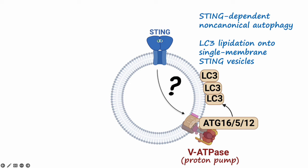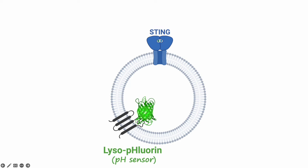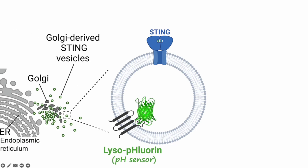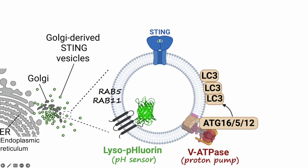While exploring whether STING triggers endolysosomal stress, we observed a STING-dependent lysofluorin puncta formation. Lysofluorin is a pH sensor normally targeted to late endosomes and lysosomes, and its fluorescence is quenched by the acidic pH in these compartments. However, STING-induced lysofluorin puncta are not late endosome lysosomes. Instead, they are endosome-like vesicles positive for endosome markers such as RAB5 and RAB11. Interestingly, these vesicles are also the major sites of STING-dependent LC3 lipidation. STING-dependent activation of the lysofluorin signal indicates increased luminal pH, or deacidification of these vesicles, which is consistent with the activation of the proton pump for vesicle reacidification and LC3 lipidation.